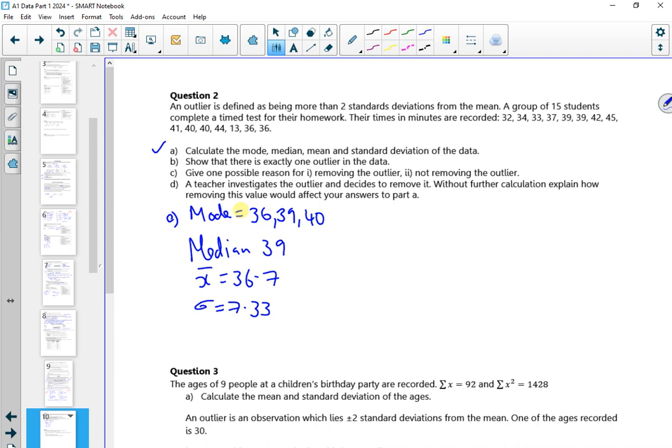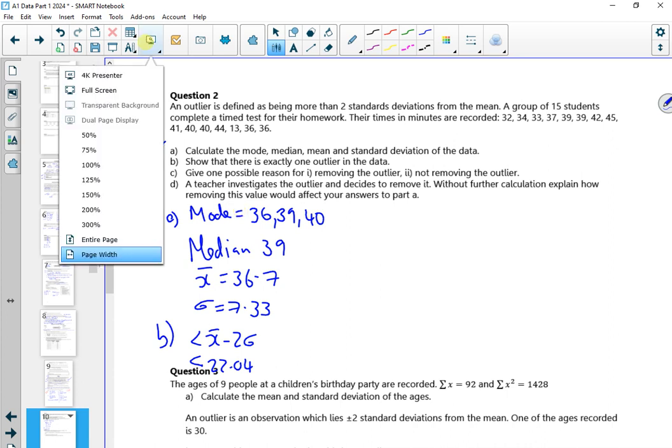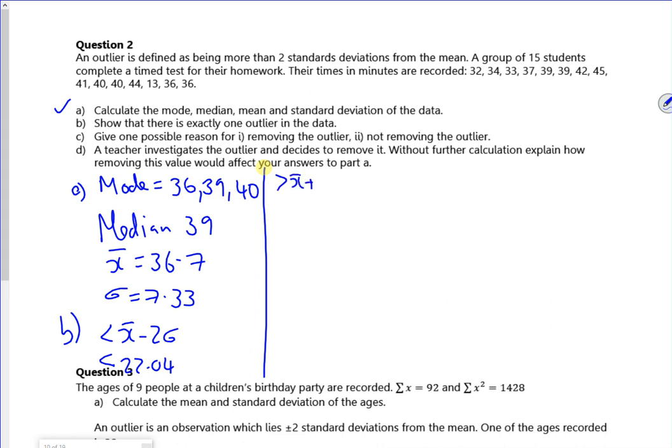So one outlier. If I check, if I cheat and look at less than x-bar minus two sigmas, if I put those numbers in, it gives me less than 22.04. Have I got any numbers less than 22.04? I haven't. So let's try greater than x-bar plus two sigmas. If I put the numbers in, 36.7 and 7.33, that gives me greater than 51.36. So have I got any numbers bigger than 51.36? No. So I've got no outliers. Oh wait, look at that random 13 snuck away in there. You donkey. This is what happens when you're rushing at the end. I've got 13 as an outlier.